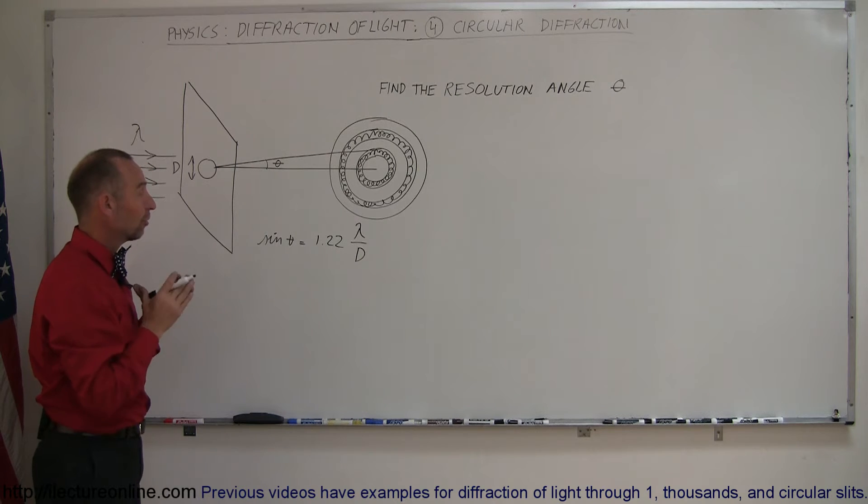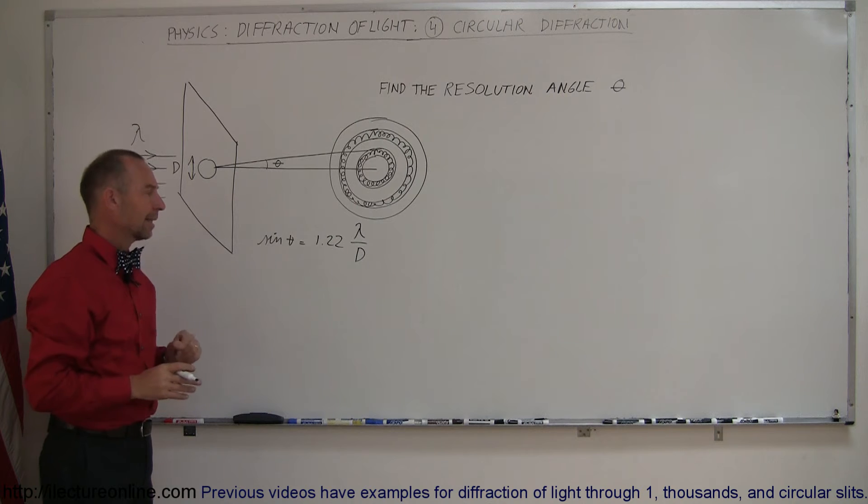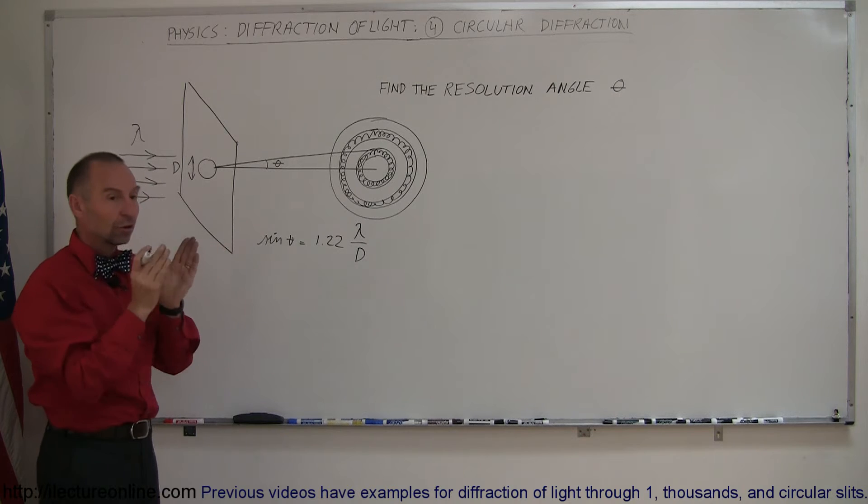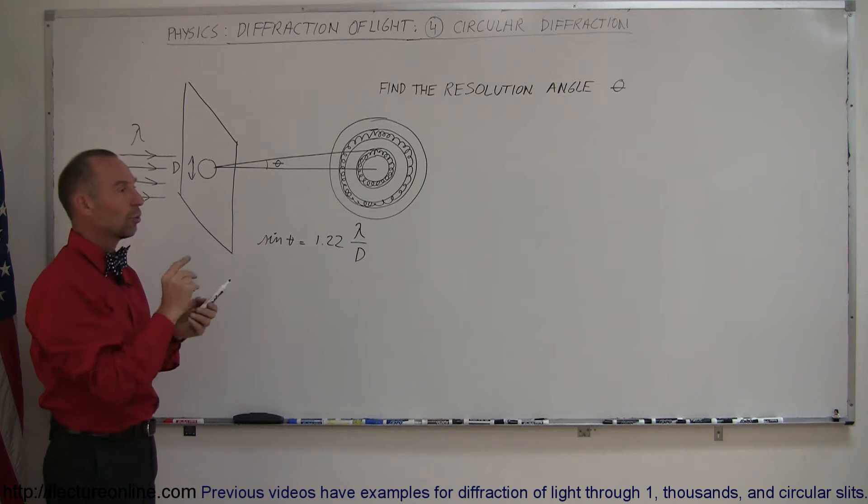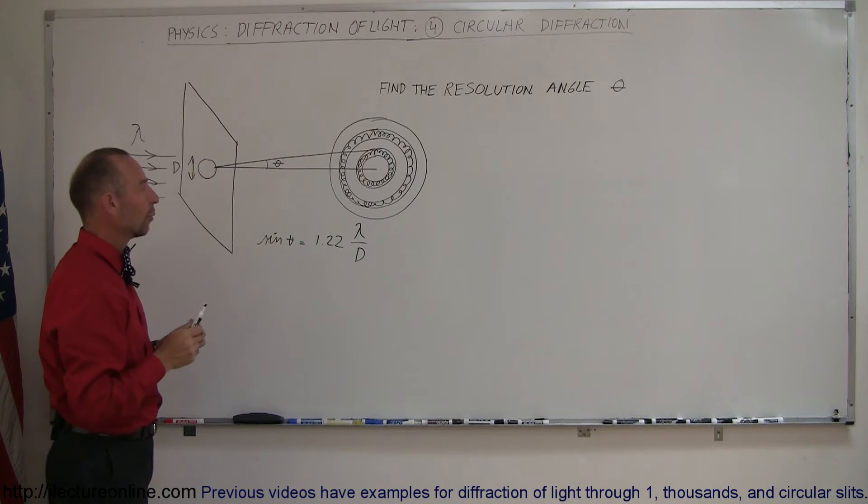The angle of resolution does depend upon the wavelength of the light and the diameter. The better the resolution, the smaller the angle. The smaller the angle of resolution, the sharper the image is, the more you can resolve small, closely spaced objects from one another.